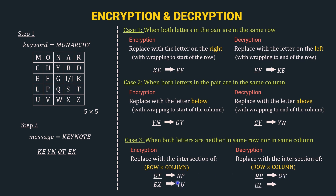Let's look at the last diagram IU. We locate I/J and U in the matrix. For I: take row of I and column of U — the intersection is E. So I is replaced by E. For U: take row of U and column of I — the intersection is X. So U is replaced by X. IU decrypts to EX.